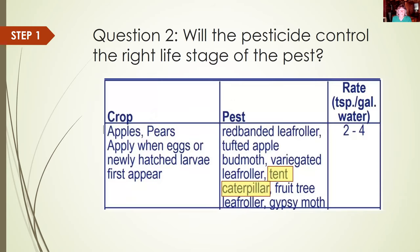Will it control the right life stage of the pest? Here's an insecticide that's labeled for tent caterpillars on crabapple and apple trees in the spring. You need to apply it soon after the caterpillars hatch. Once they grow a bit, the product will no longer be effective — it simply won't work.